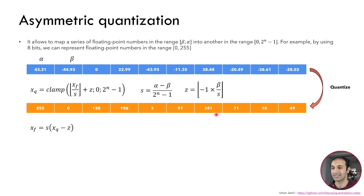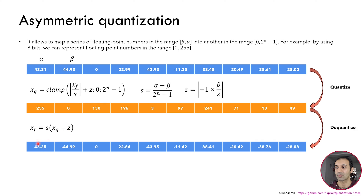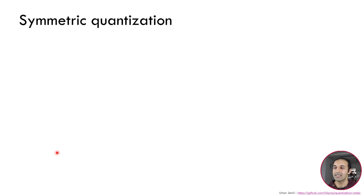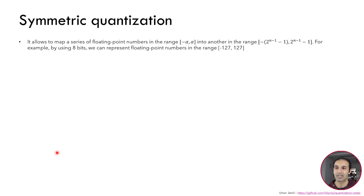We can then dequantize using the following formula: to obtain the floating point number back, we multiply the scale s by the quantized number minus z. We should obtain the original tensor, but you will see that the numbers are similar but not exactly the same, because quantization introduces some error — we are squeezing a range that could be very big (32-bit) into a much smaller range (8-bit), so of course we introduce some error.